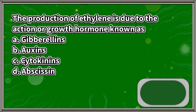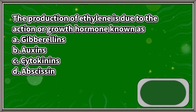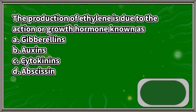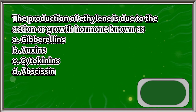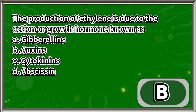The production of ethylene is due to the action of a growth hormone known as: A. Gibberellins, B. Auxins, C. Cytokinins, D. Abscisic acid. The answer is letter B.